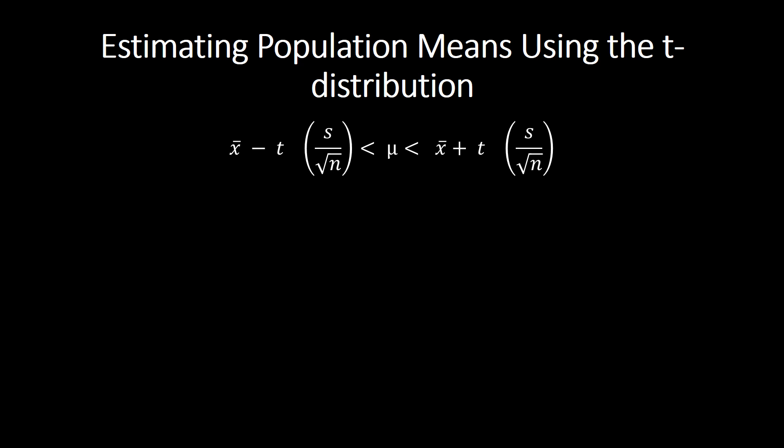Let's try estimating population means using the t-distribution. The formula for the lower value is: x-bar minus t times s over square root of n. Since we're talking about a confidence interval, we need both a lower and upper value. The upper value is: x-bar plus t times s over square root of n. Within that interval, your population mean will be found.